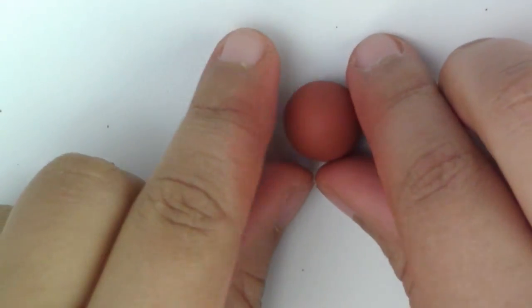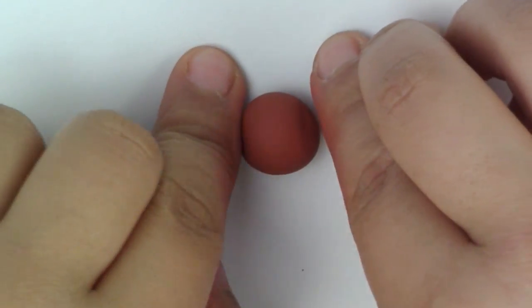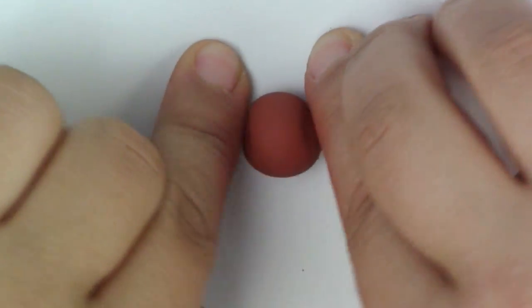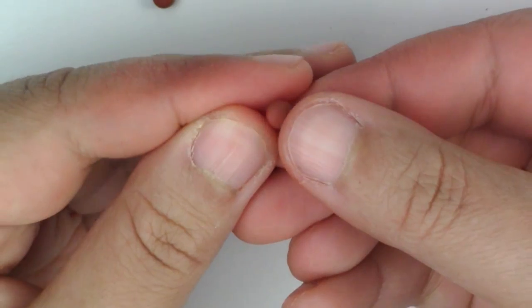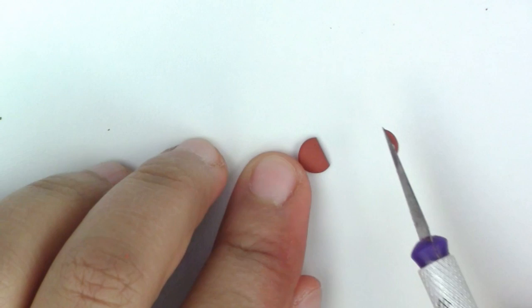For Freddie, make a circle for the head and push between your fingers to get chubby cheeks. Flatten circles for the ears, and smooth them in.